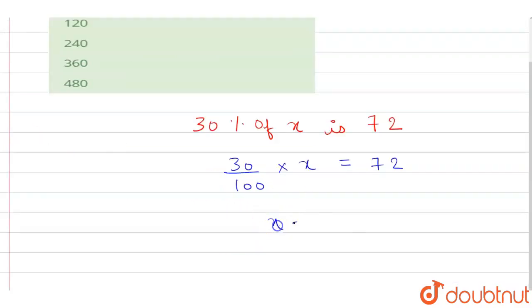So this will become x equals 72 times 100 divided by 30. This will cancel by 10 three times, and 72 will cancel by 3, giving us 24 times 10.